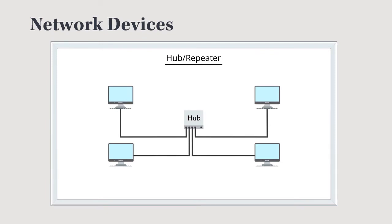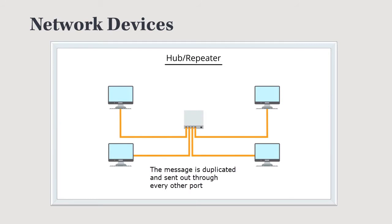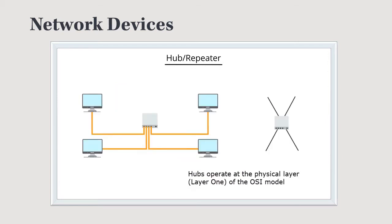Here is a hub. It's a central device in a physical star topology — we simply connect the different nodes to it. When one host sends a message, it goes into the hub and is broadcast out to all other hosts. This is the logical bus topology we covered before, where all hosts are connected to the same wire and a message is broadcast to every node on the network.